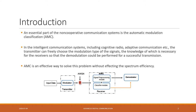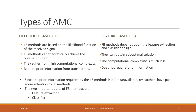The demodulator demodulates the signal. In cognitive radio and adaptive communication, the transmitter can freely choose the modulation type of the signal. Conventionally, knowledge of this modulation must be present at the receiver so that effective demodulation can be performed. The purpose of AMC is to eliminate the need for this prior knowledge and give the receiver the ability to identify the modulation type and demodulate the signal effectively.